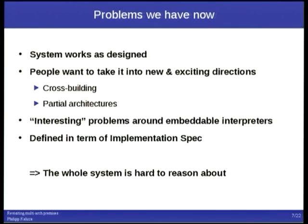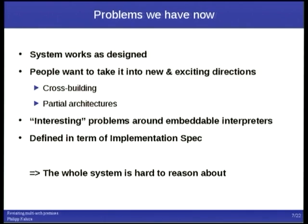Now we have this nice multi-arch system and we want to do fun, fancy, and cool stuff with it in new and exciting directions. We just talked about building cross-compilers and making that easier by actually using a full archive — if a compiled libc is already in the archive for that architecture, why should we need to cross-build it just to get our cross-build tool chain? We've also been talking about partial architecture, MinGW came up as an example that would most certainly be partial. And people converting their packages to multi-arch have been finding some interesting problems around embedding of interpreters.